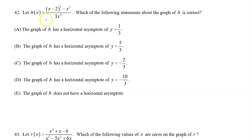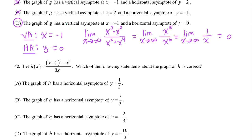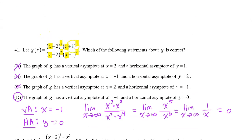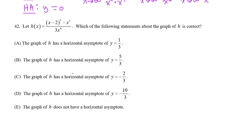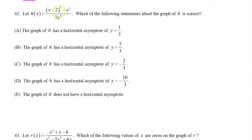Number 42. Let h of x equal this expression. Which of the following statements about the graph of h is correct? We have a bunch of statements about a horizontal asymptote. This is a strange way of writing a function — we're used to seeing factored form like we saw in number 41. Notice that there's no plus or minus in here, so we don't see this very often. And when we do, we need to expand this binomial to figure out what's really going on.